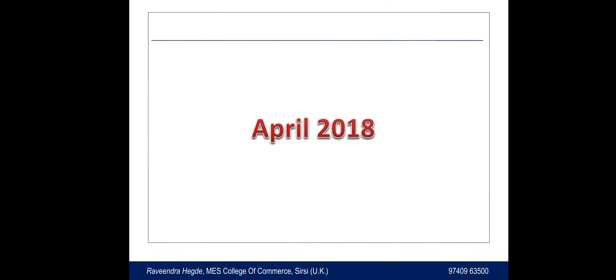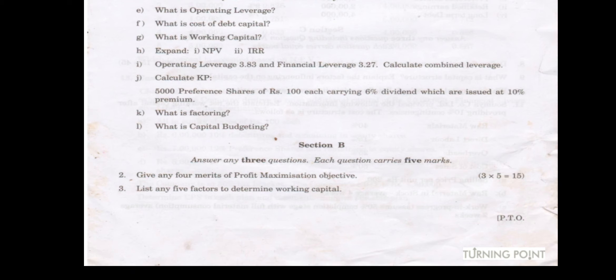This is the 2018 paper. The first two questions are from Unit 1: what is business finance, and state two advantages of wealth maximization — we have already covered these. Question number 9 is operating leverage, which is a problem. Question number 10 is also a problem. So in this paper there are three problems. In Section B, the first question is: give any four merits of profit maximization objective.